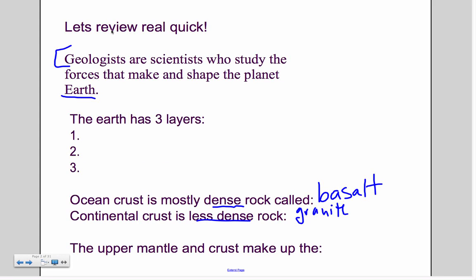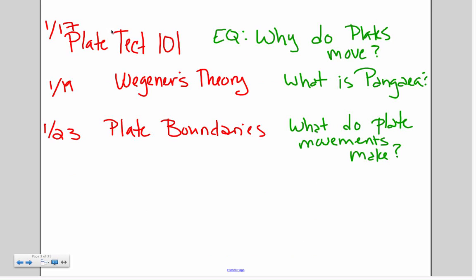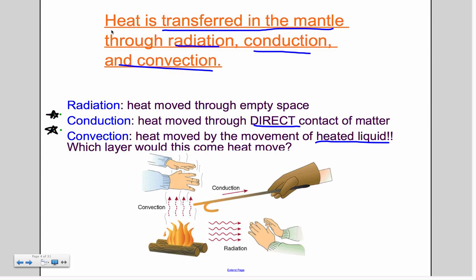The upper mantle and the crust make up the asthenosphere. Heat is transferred in the mantle through either radiation, conduction, and convection.